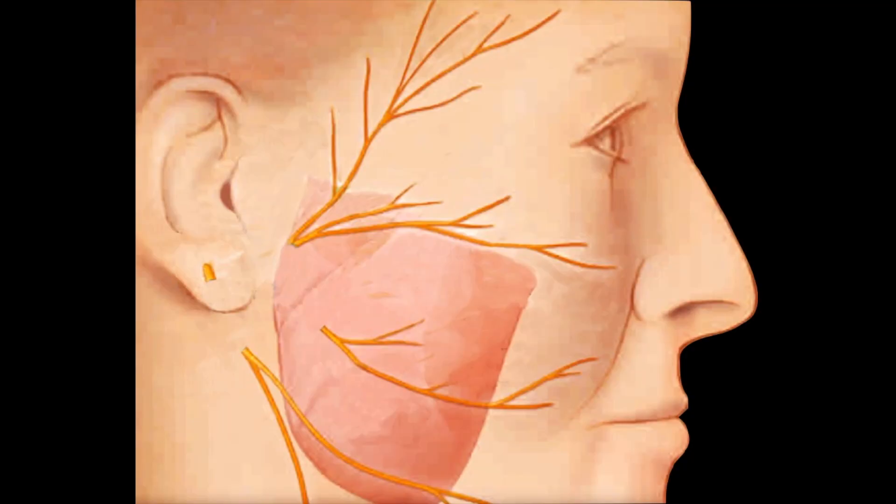In malignant tumors, the entire parotid gland — both the superficial and deep lobe — will be removed while preserving the facial nerve if possible. If the tumor is found infiltrating the facial nerve, that portion of the facial nerve will be resected along with the tumor and then the nerve will be grafted. The skin is closed using plastic surgery techniques so that there is minimal scarring.